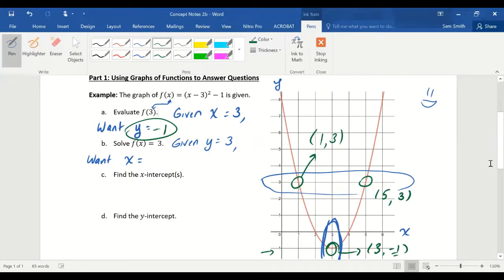So they wanted the x values which correspond to y equals 3. And so I will just list the x coordinates of the points where y is 3. x could be 1 or x could be 5. And I'll give both of those values with a comma between.